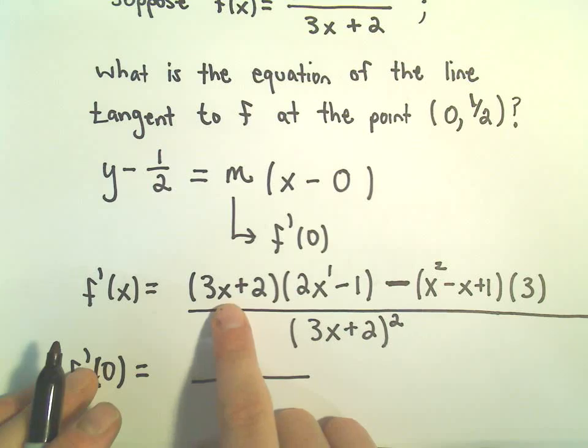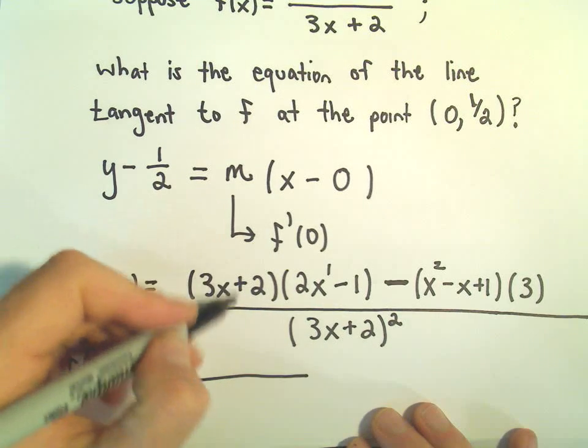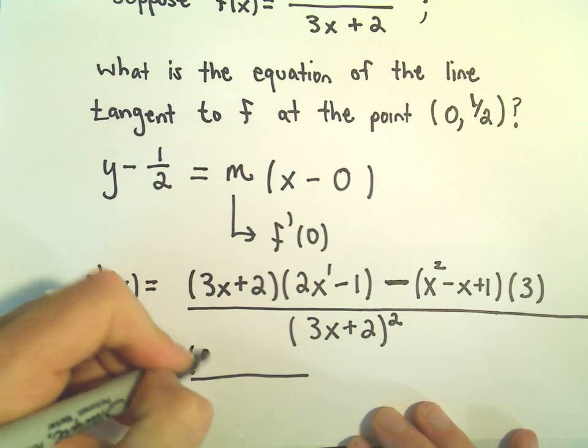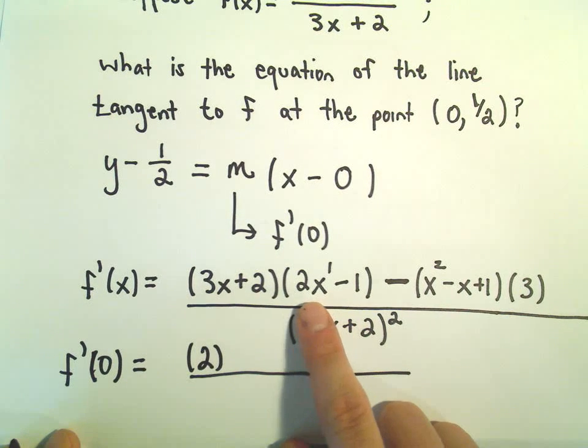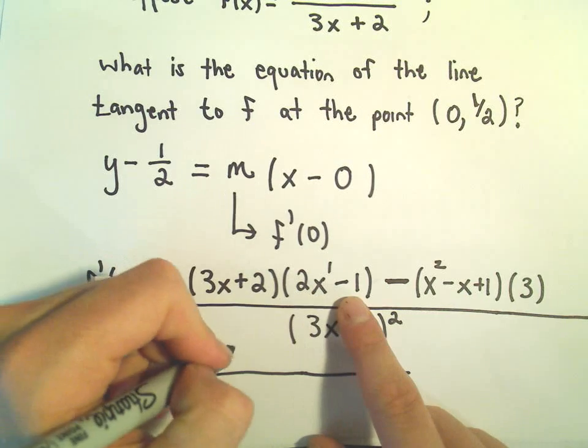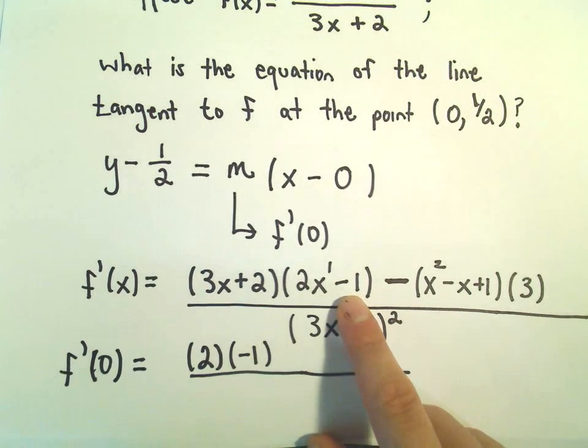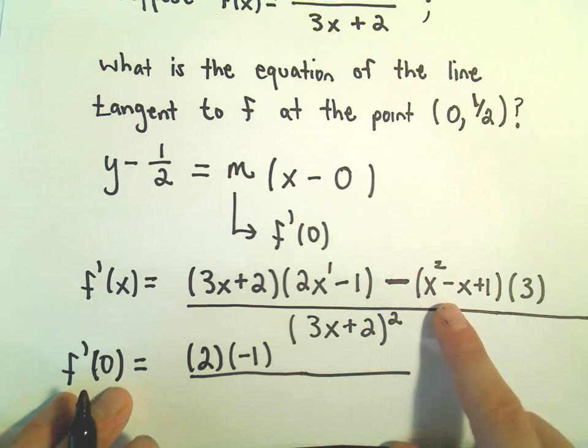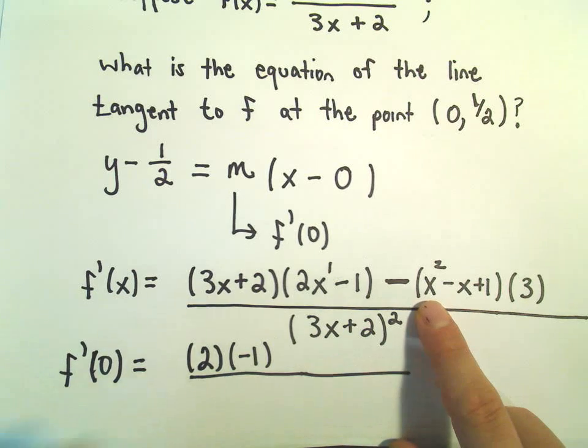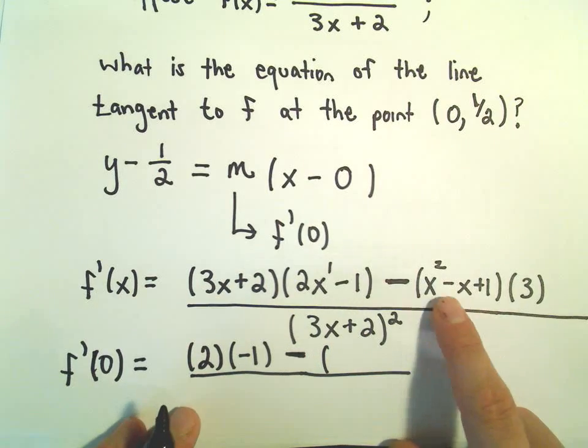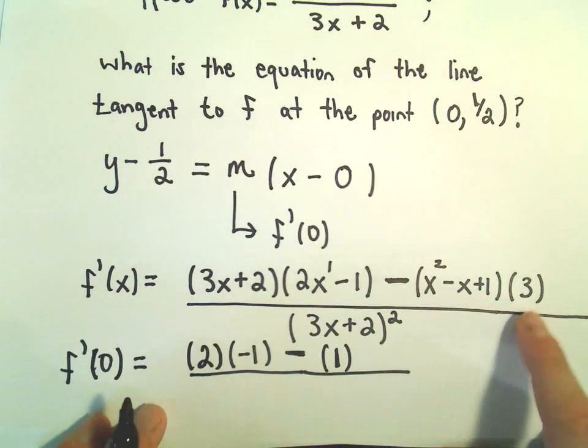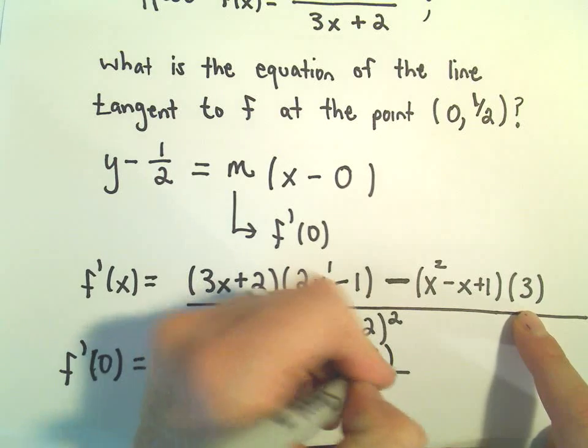So notice if we plug in x = 0, we'll get 3 times 0, or 0. Then we'll just be left with 2. If we plug in 0 for the x in our second factor, we'll get 2 times 0 minus 1, or just negative 1. In the second part, let's see if we plug in 0. So there's our minus in between. We'll just be left with 0 - 0 + 1, which is 1.